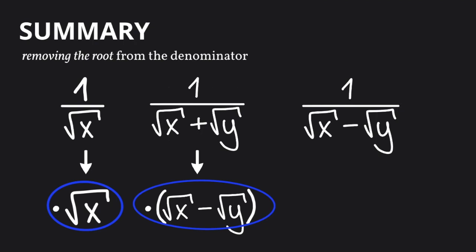In the third case, when we have the minus with a number and a square root or two square roots, we also invert the sign. The minus becomes a plus.